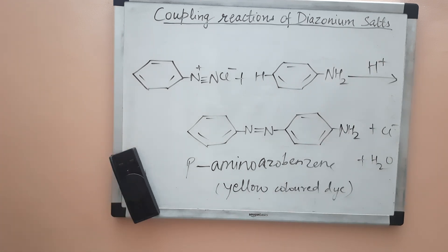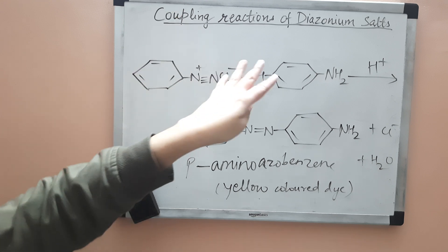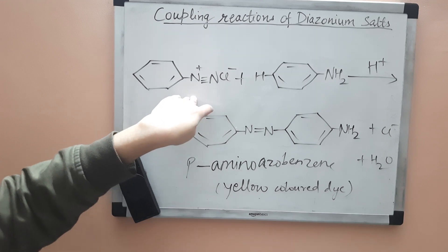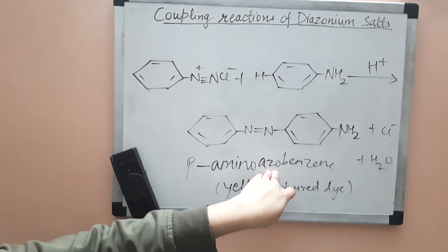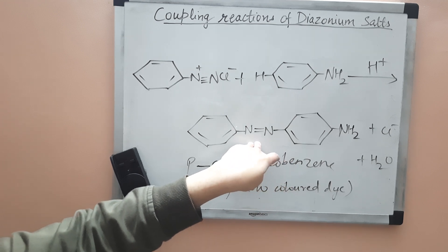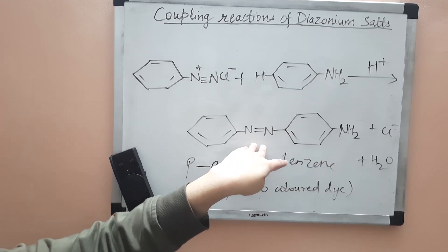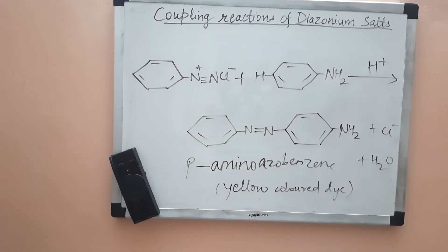These two kinds of reactions are called coupling reactions because the para position of the aromatic compound gets coupled with the diazonium group, and azo compounds are formed which have two aromatic rings attached through N=N. The final compound is a colored dye.